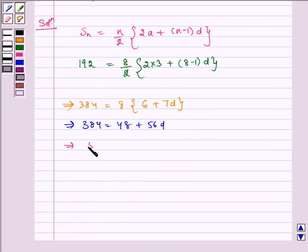Which implies 56d is equal to 384 minus 48.